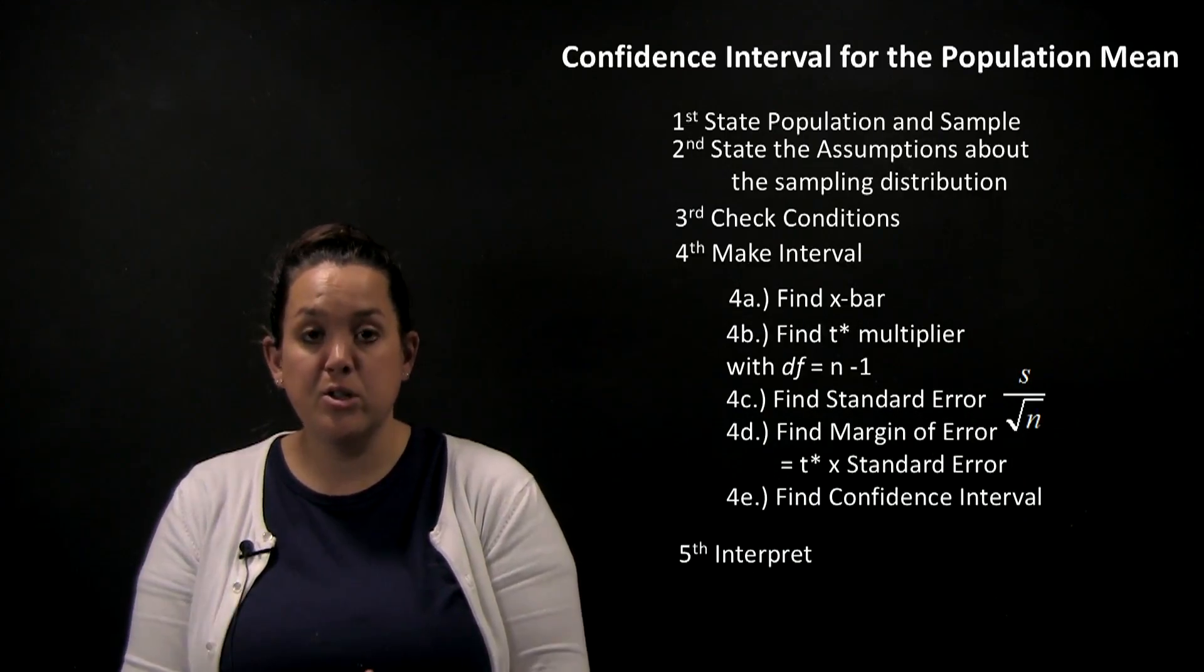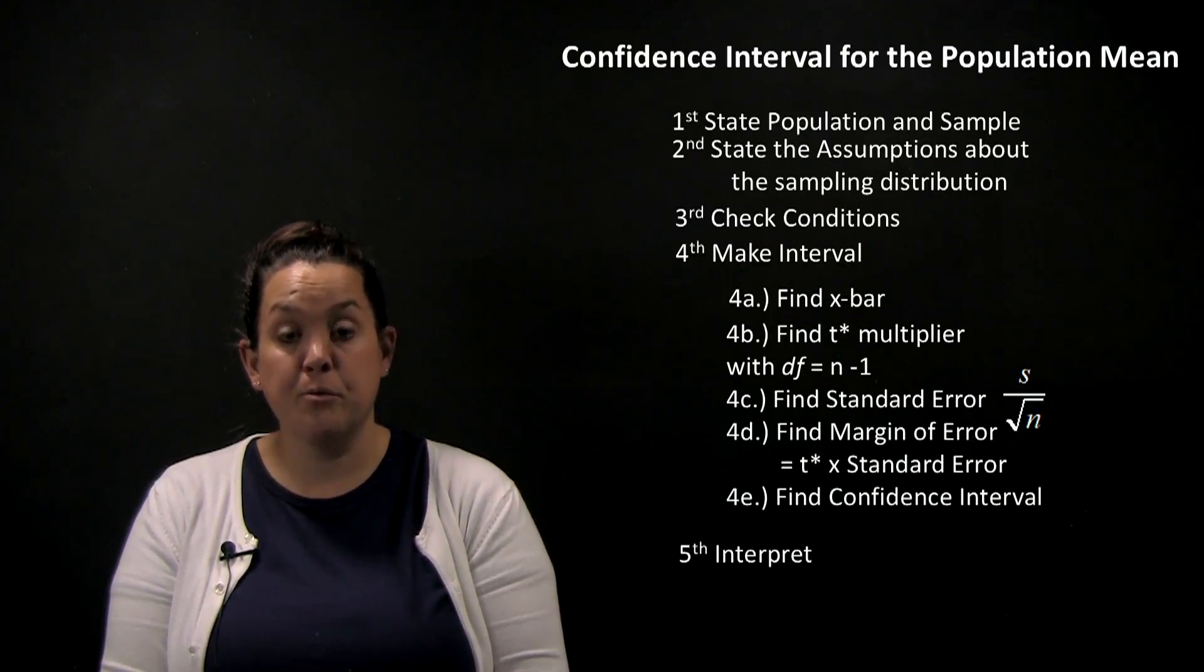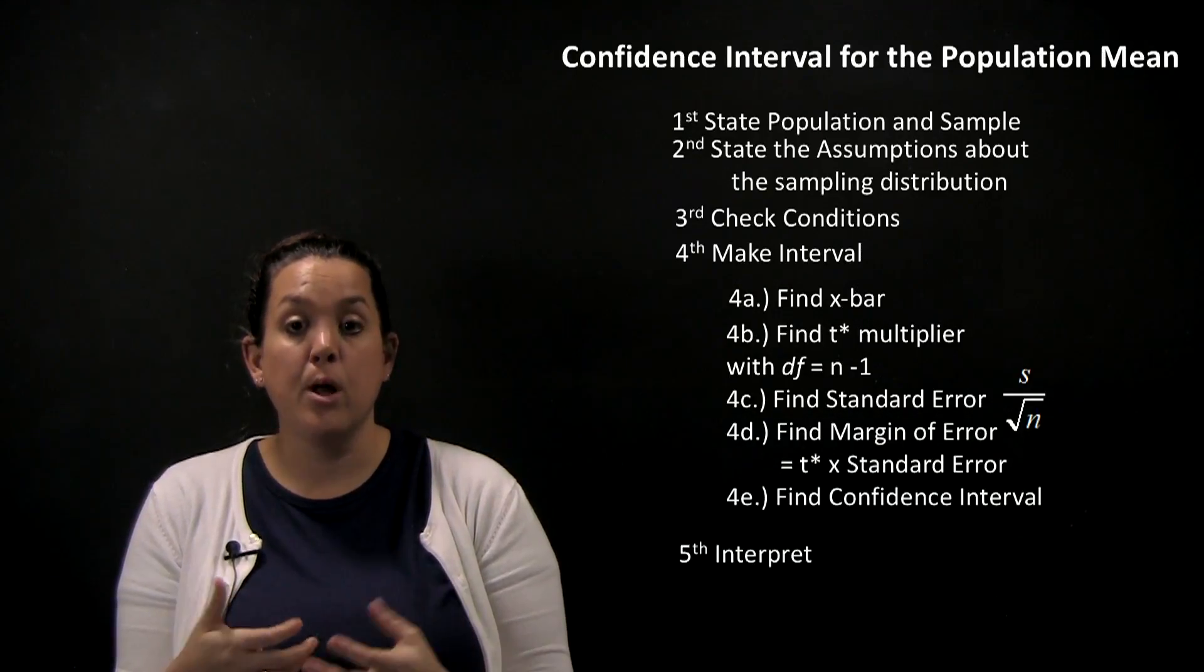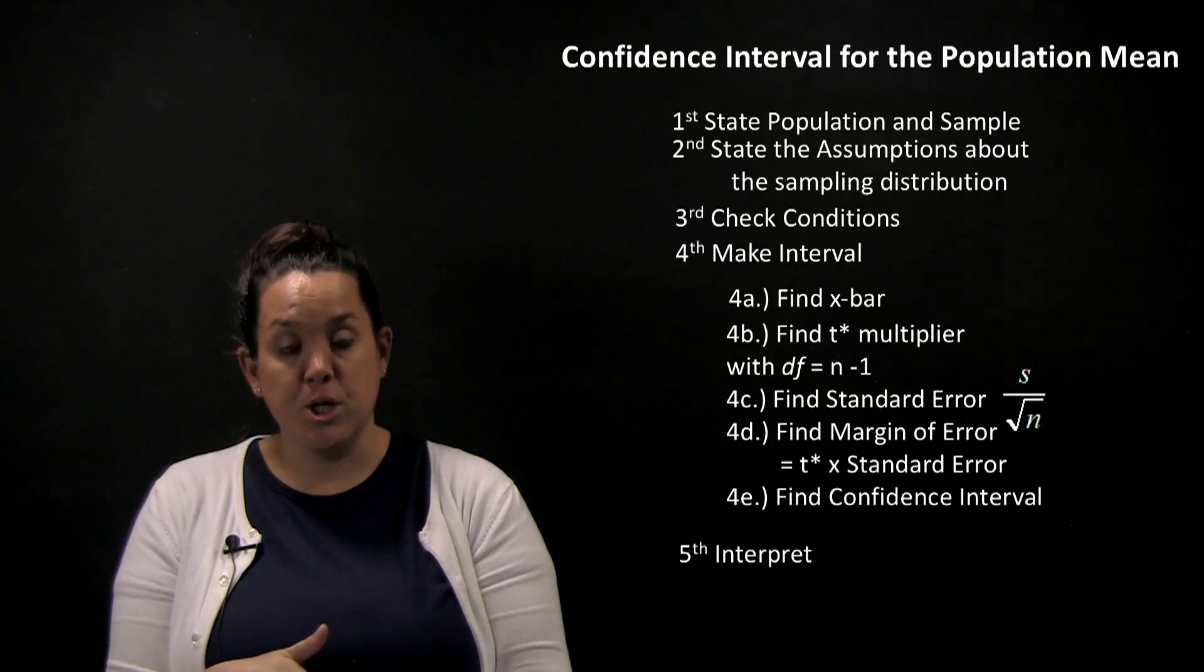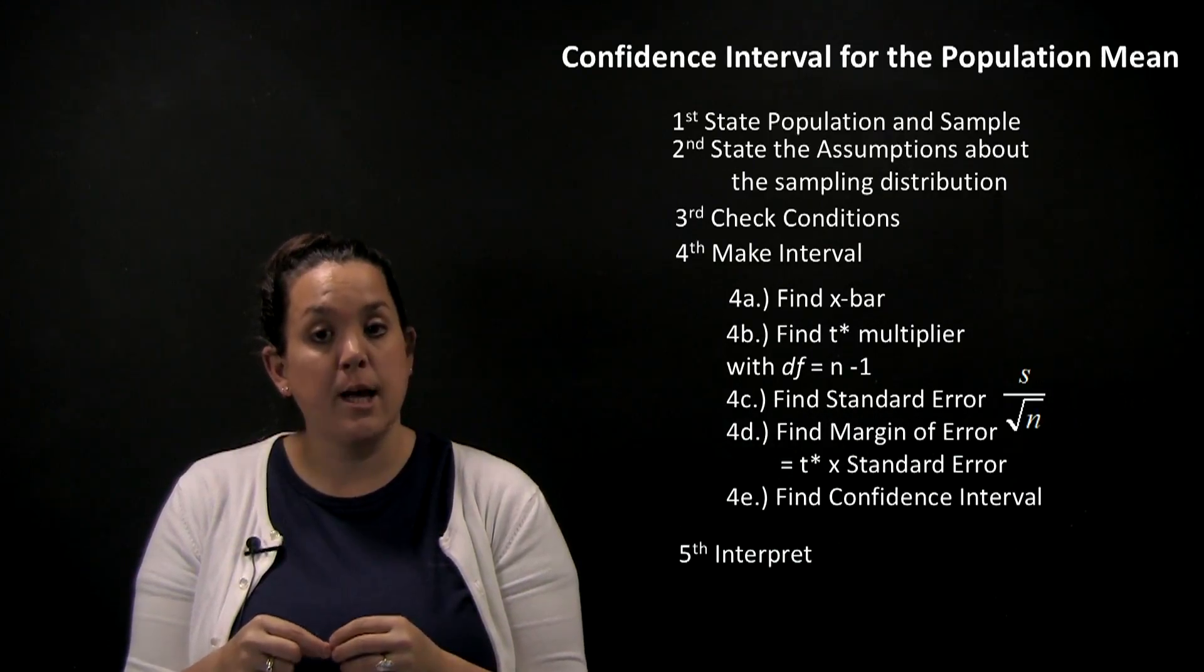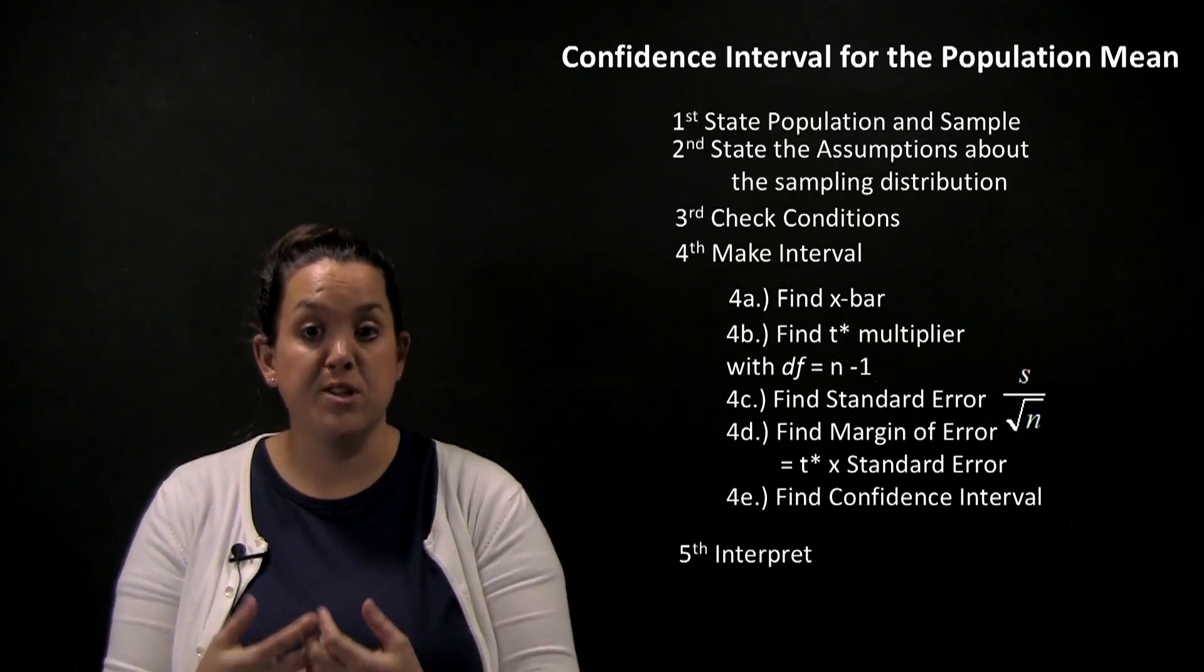Just a few reminders. First, remember that a confidence interval is a form of statistical inference. We're going to have to use a sample to make an inference on a population. Specifically here, we're going to use sample information to calculate an interval we hope mu is contained within.